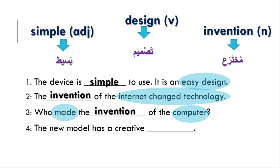Number four: the new model has a creative ___. The key words here are 'model' and 'creative' — it's new, it's been made, and it's creative. That points us to design. The new model has a creative design. Excellent — let's move on.